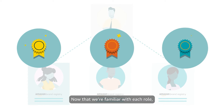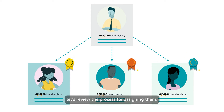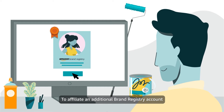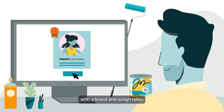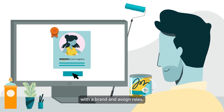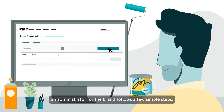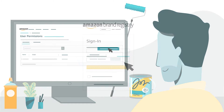Now that we're familiar with each role, let's review the process for assigning them. To affiliate an additional Brand Registry account with a brand and assign roles, an administrator for the brand follows a few simple steps.